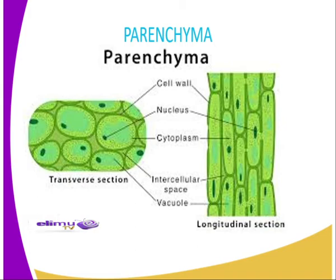In the parenchyma tissues, as you can see, we have the cell wall, the nucleus, the cytoplasm, the intercellular space, and the vacuoles. The parenchyma contains a cell wall, and the function of the cell wall is to give the plant cell a definite shape, unlike animal cells which lack the cell wall. The cell wall also protects the plant from mechanical injury.